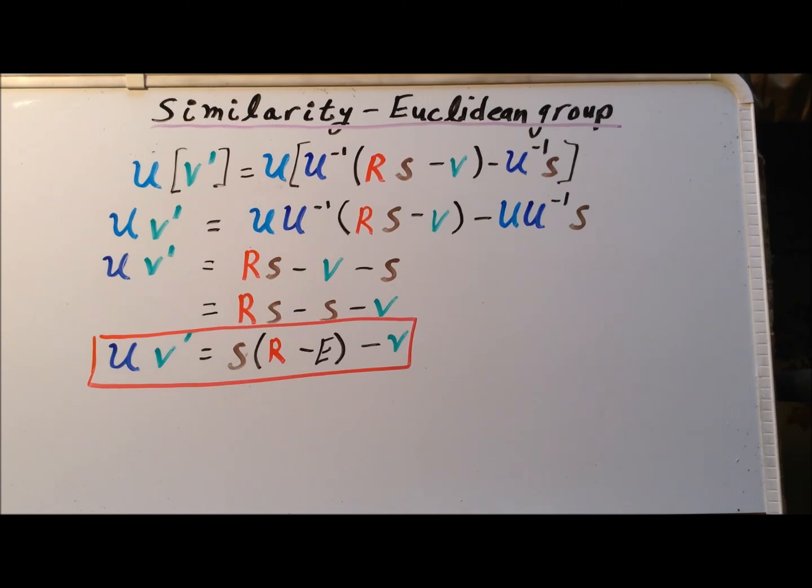But now let's just look at the circumstance where this operation U is simply the identity. So let's look at the case where there is essentially no rotation, and we just have a pure shift. In the case for a pure shift, U becomes the identity, and then we get that the transformed shift V prime is equal to S times the quantity R minus E minus V.